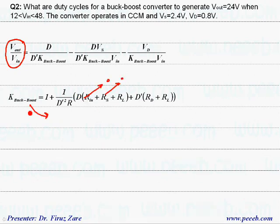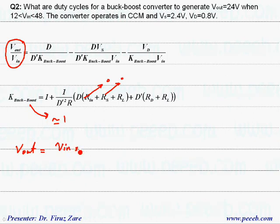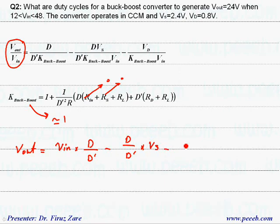Looking at the output voltage equation, since the resistors are 0, k_buck-boost equals 1 and we can simplify. V_out equals V_in times (D / D') minus (D / D') times V_s minus V_d.